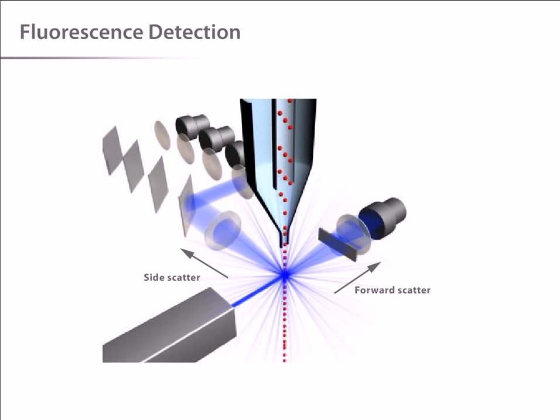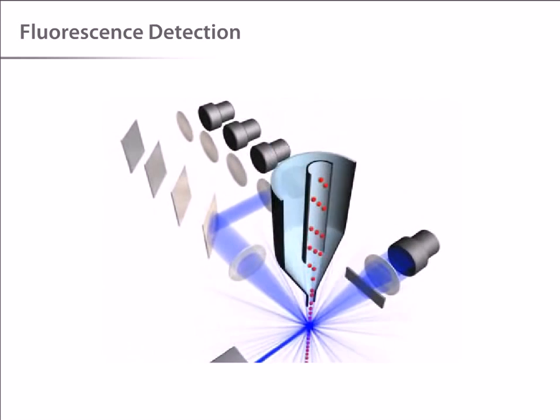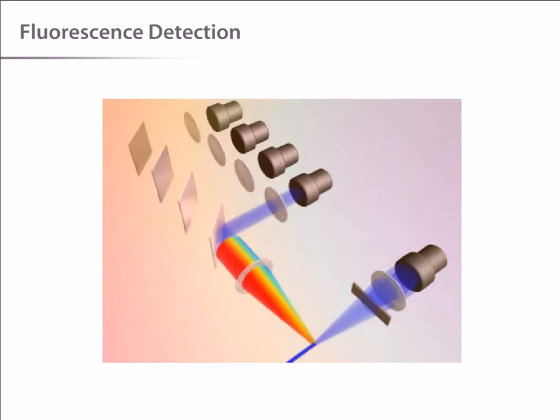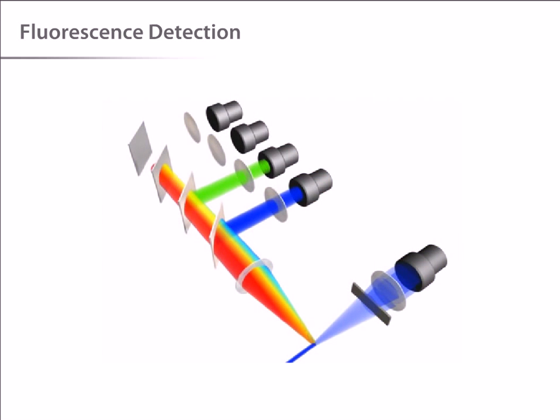How is this fluorescence information collected? The fluorescent light, coming from labeled cells as they pass through the laser, travels along the same path as the side scatter signal. As the light travels along this path, it is directed through a series of filters and mirrors so that particular wavelength ranges are delivered to the appropriate detectors.